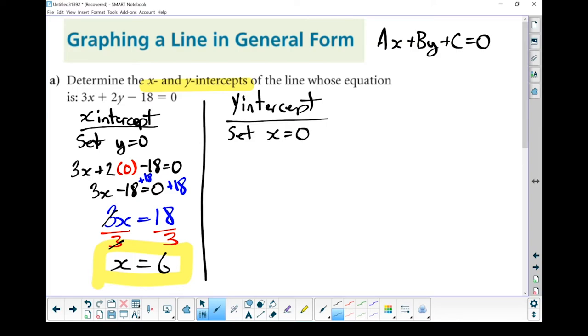Because it doesn't matter where it crosses the y-axis, the x value of that point always equals 0. I'm going to rewrite my equation and anywhere where I've got an x, instead, I'm going to put in a 0.